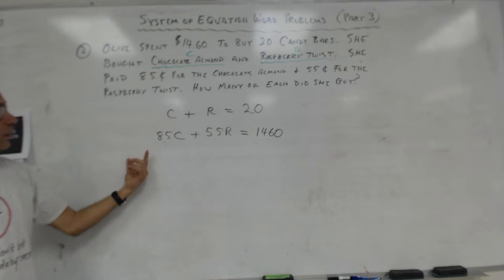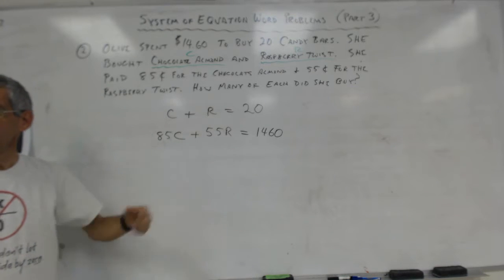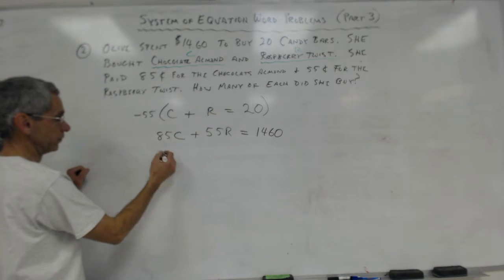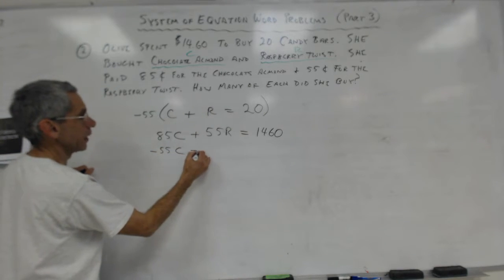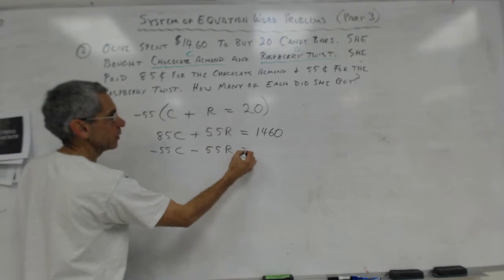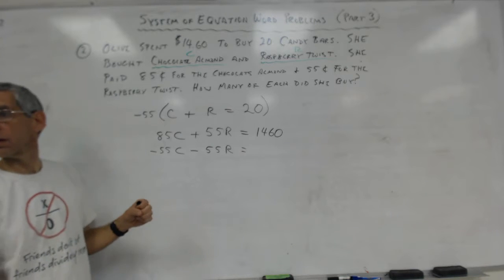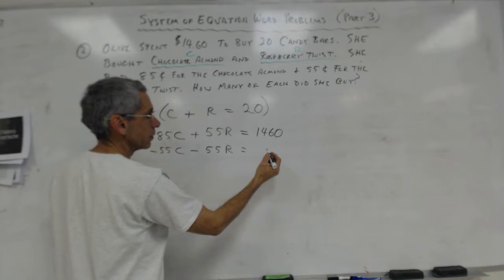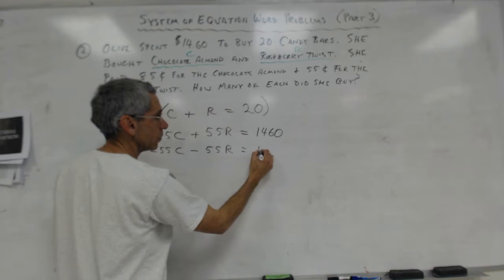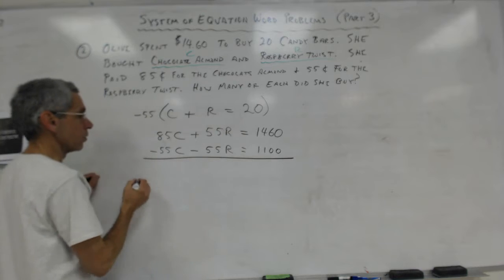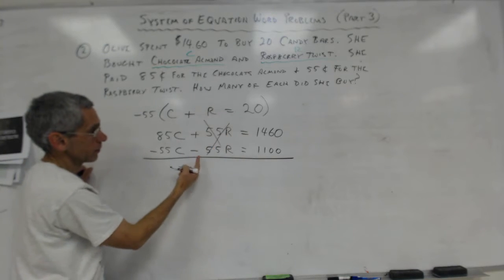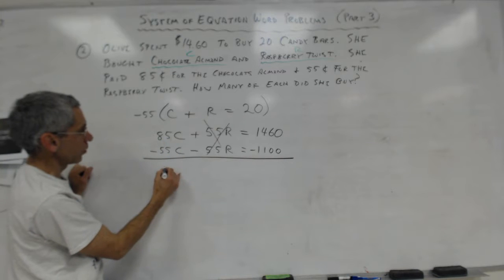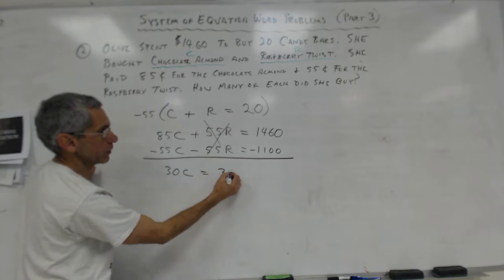So negative 55, negative 55. So that would be negative 55C minus 55R equals negative 1100. Okay, so there we go, so now we can add them together, the R's are going to cross out. And then so here we've got 30C's, I think, is equal to 360.